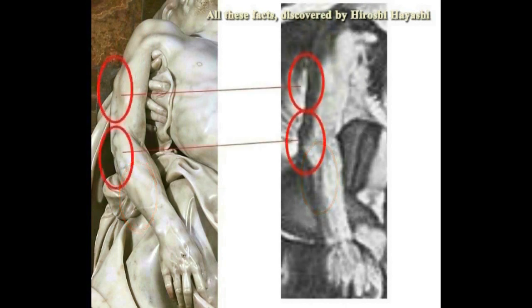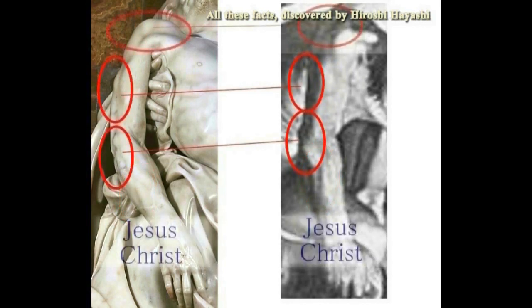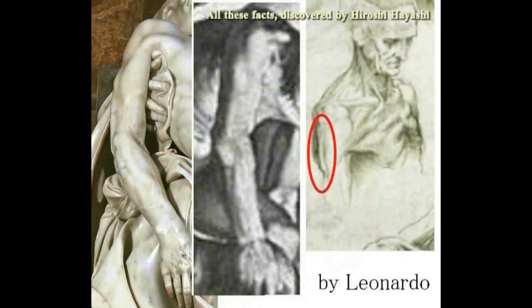ミケランジェロは、左がイエスであり、右のカッシナの戦いの中に描かれているこの人物もイエスであることを表現しました。左はイエスですから、右もイエスということになります。そして同じ人物を、ダ・ヴィンチなる画家が解剖図の中で描いています。